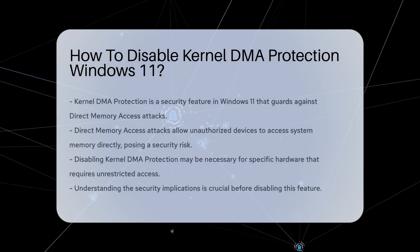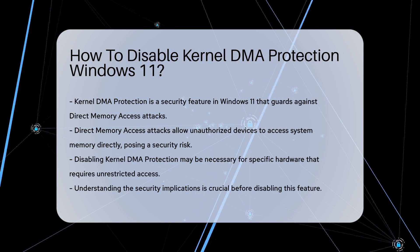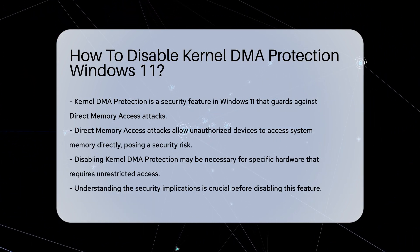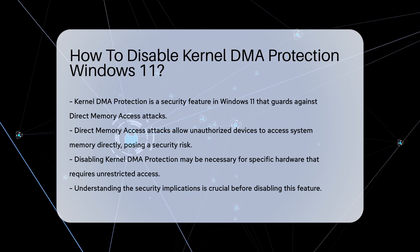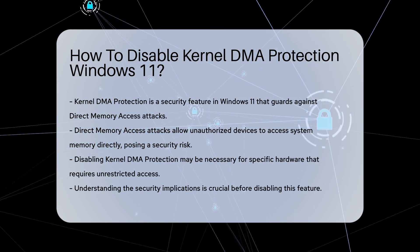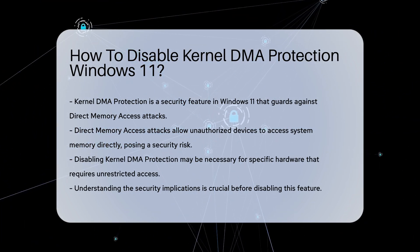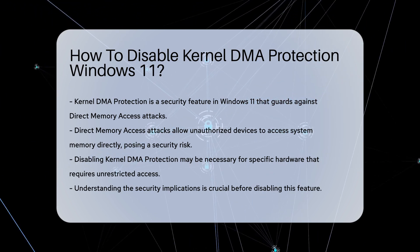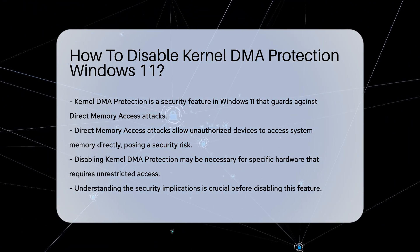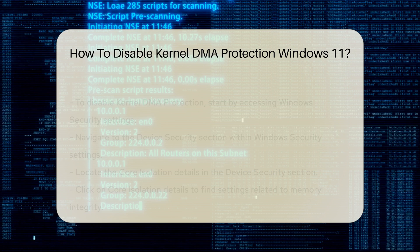Kernel DMA Protection is a security feature in Windows 11 designed to protect your system from direct memory access attacks. These attacks can occur when unauthorized devices access the system memory directly. Disabling this feature may be necessary for specific scenarios, such as using certain hardware that requires unrestricted access. However, it is crucial to understand the security implications before proceeding.